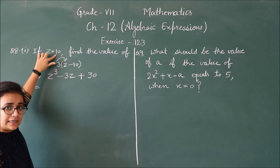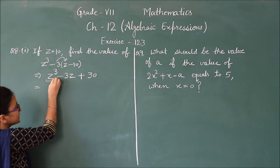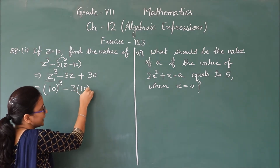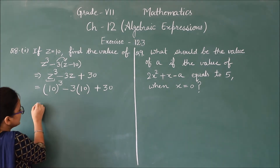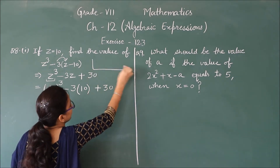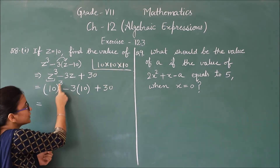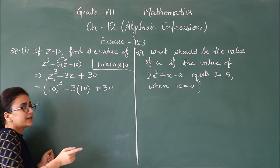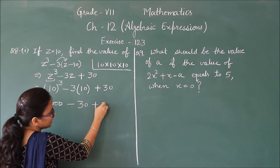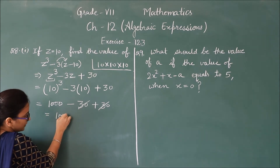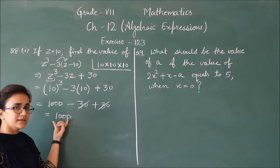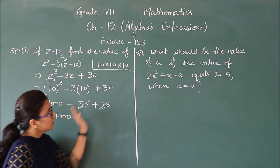Now the value of z is 10. So we put z equals 10 here. z cube means 10 multiplied 3 times: 10 into 10 into 10, which gives 1000. Minus 3 into 10 is 30, plus 30 — so the minus and plus cancel. Our answer is 1000. Similarly, you can try its second part.